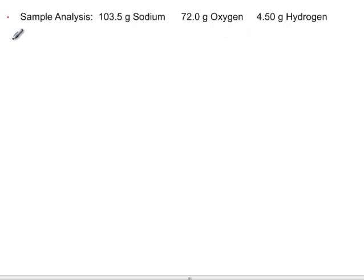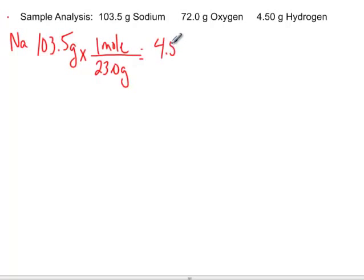Let's start with sodium. We have 103.5 grams of sodium, but that doesn't help us because we really need moles. The empirical formula is the simplest whole number mole ratio, so we've got to convert grams to moles. We're going to put 23 grams here because that's how many grams are in one mole of sodium. We look on the periodic table for that information, and when you do the math here, you end up with 4.5 moles.